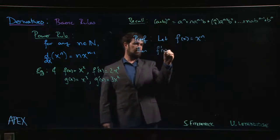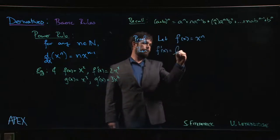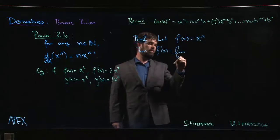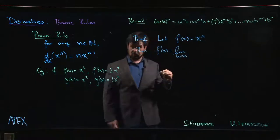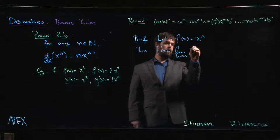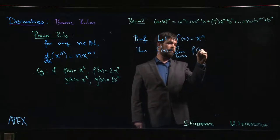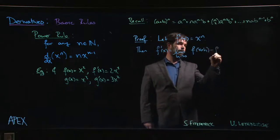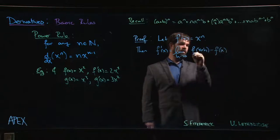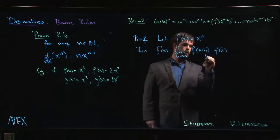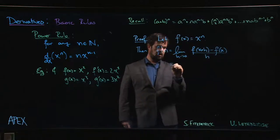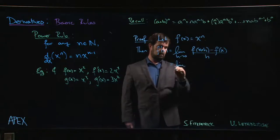Then, f prime is the limit as h goes to 0 of f of x plus h minus f of x over h.